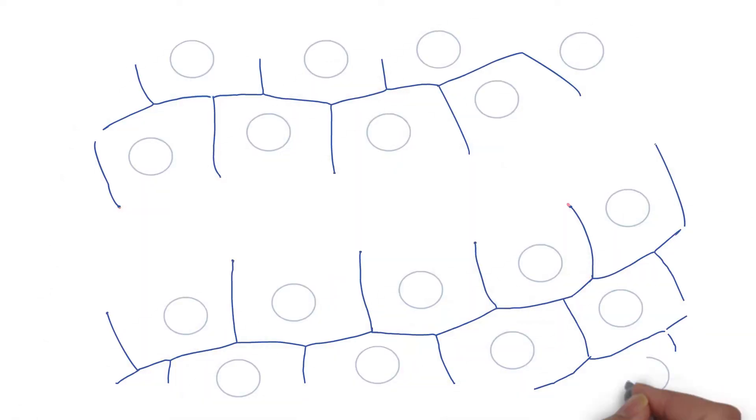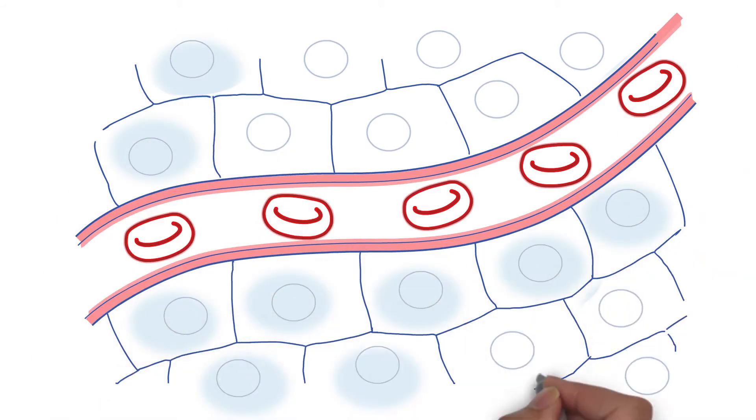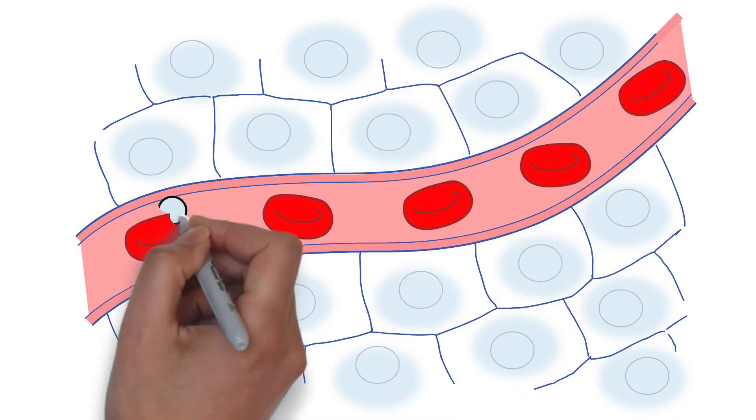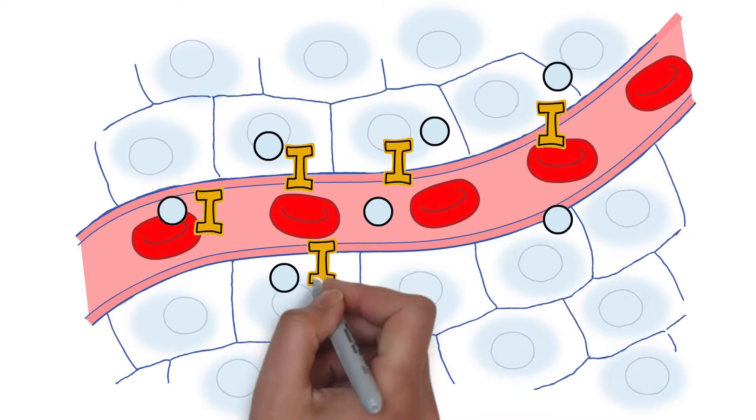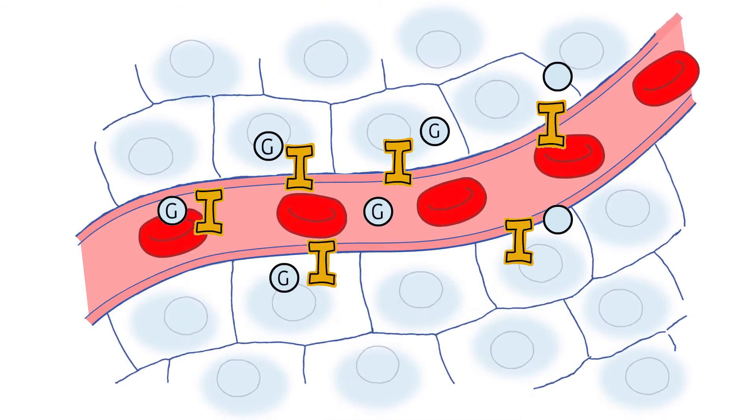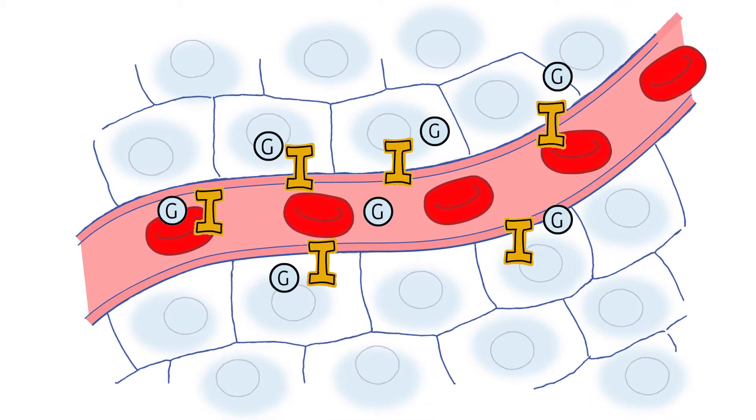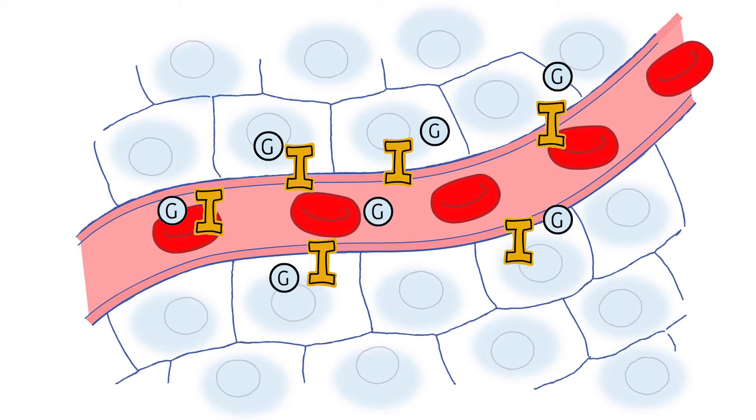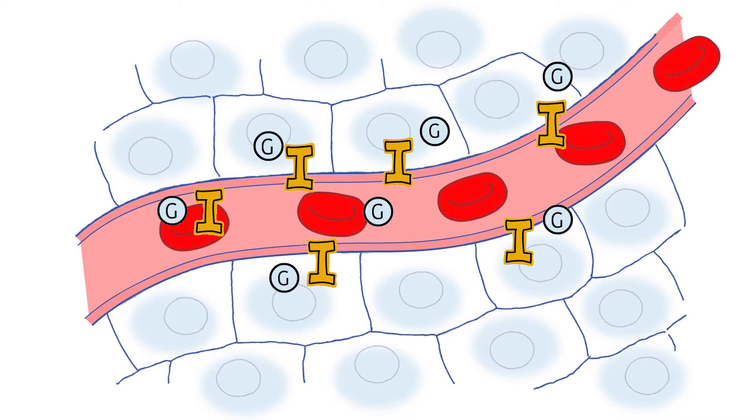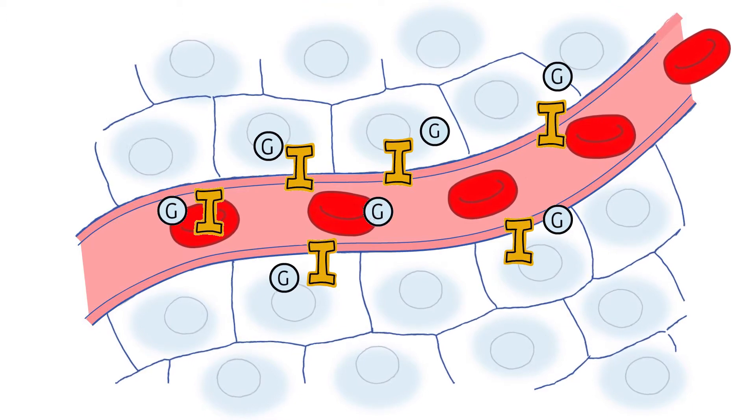Insulin is a hormone. It works like a gatekeeper to move sugar (glucose) from your blood into your cells. Your cells use the sugar for energy, or the sugar can be changed into fat when needed. If you don't have enough insulin or your body can't use it, your cells don't have the fuel they need to work.